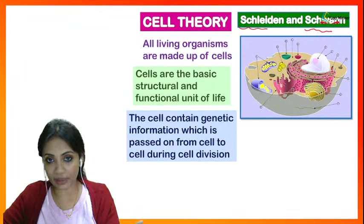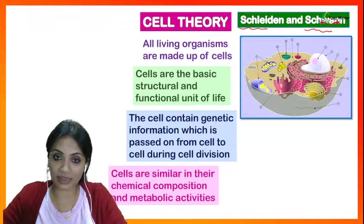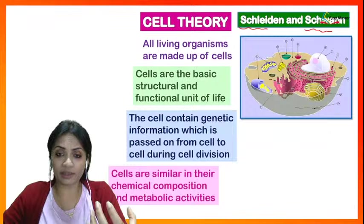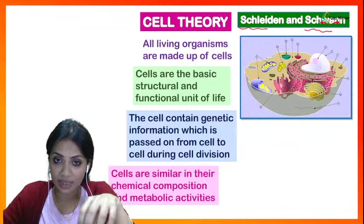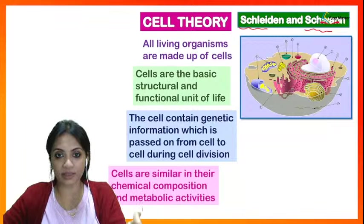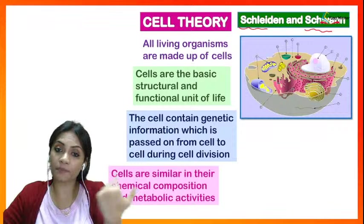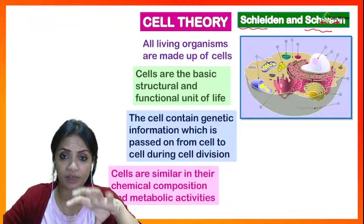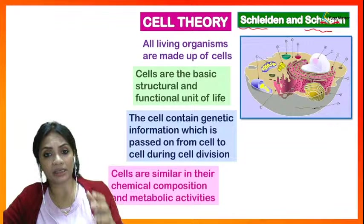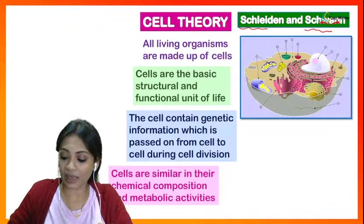Cells are not only similar in their shape and structure but also similar in their chemical compositions. For example, the nuclear components are the same in all cells. If it is a nucleus, it must be composed of a certain material. If it is a plasma membrane, it is always going to be made up of the same chemical composition, whether it is an animal cell or a plant cell.